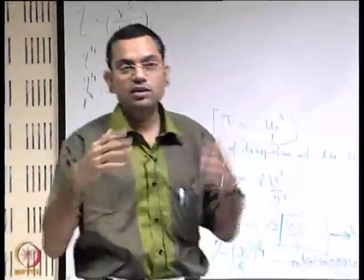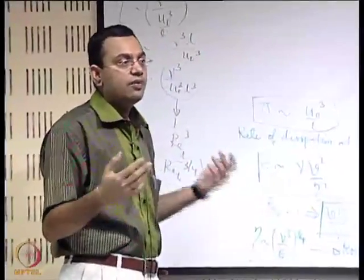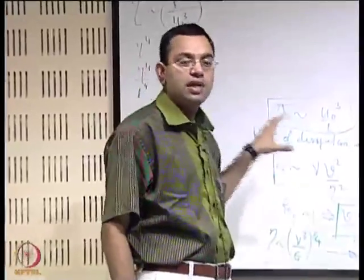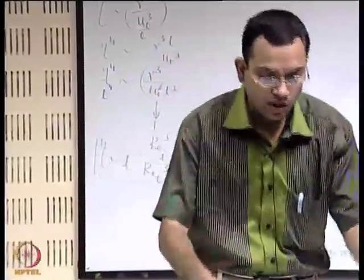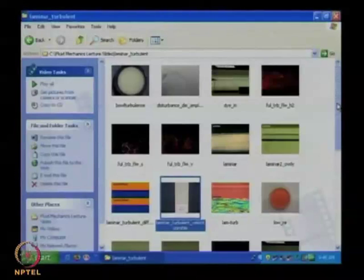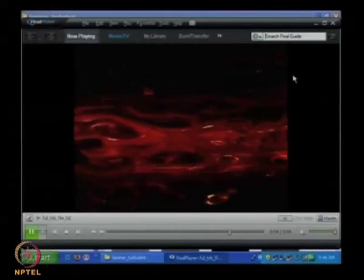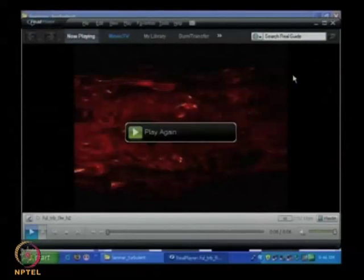In the last lecture, we were trying to assess the different length scales of the different size eddies. Before going to a formal assessment using the scaling relationship that we have established, let us now look into some visual demonstrations of how these eddies might look like. Some of these are simulated flows — just look at the rotating structures, and you will see that they have a wide range of length scales.